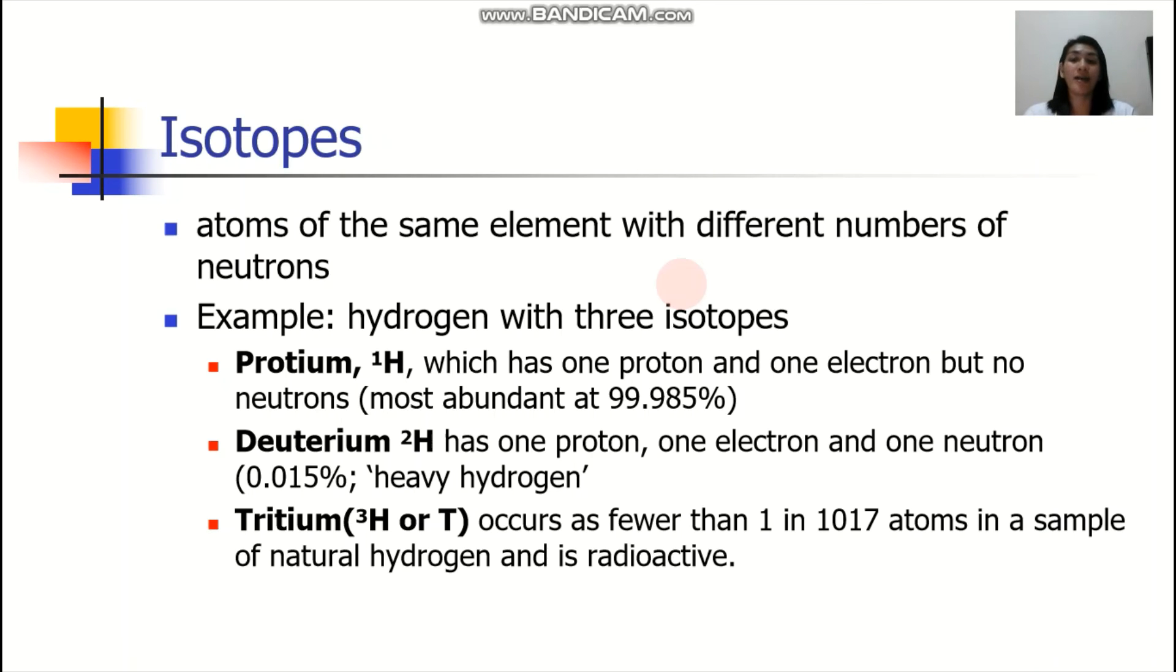Now, isotopes. Isotopes are actually the atoms of the same element with different numbers of neutrons. Neutrons ang nabago. Example, for hydrogen, we have three isotopes. You have the protium. This has one proton and one electron, but no neutrons. You also have the deuterium, which has one proton, one electron, and one neutron. You have the tritium. This occurs as fewer than one in 10^17 atoms in a sample of natural hydrogen. This one is a radioactive isotope of hydrogen.